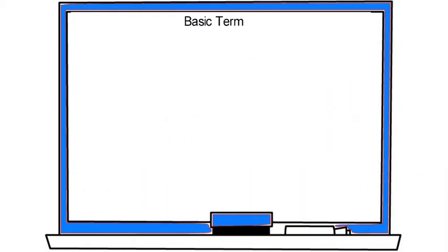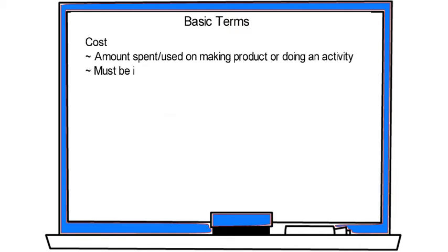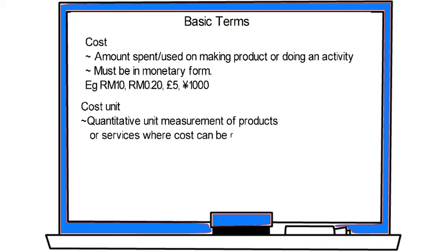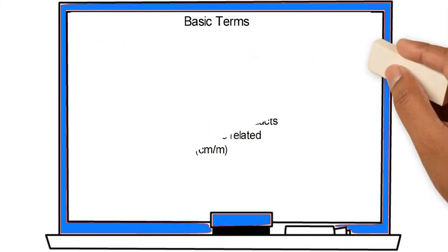These are basic terms normally used in cost accounting. Students should familiarize themselves with these terms. Cost is defined as the amount spent or used on making a product or doing an activity, and must be in monetary form — for example, RM 10 or RM 0.20. Cost unit is defined as a quantitative unit of measurement of products or services where cost can be related. For example, sugar — cost unit in kilogram or gram; silk — cost unit in centimeter or meter.